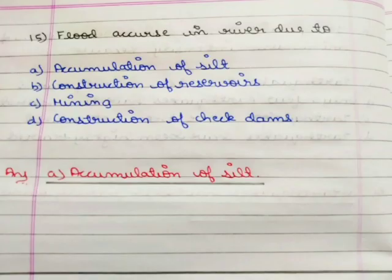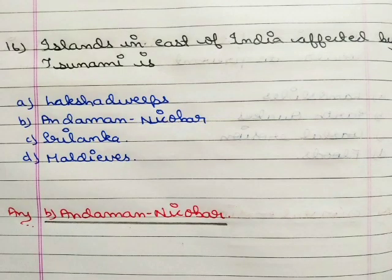Next question: floods occur in rivers due to option A accumulation of silt, option B construction of reservoirs, option C mining, option D construction of check dams. The correct answer is option A accumulation of silt.